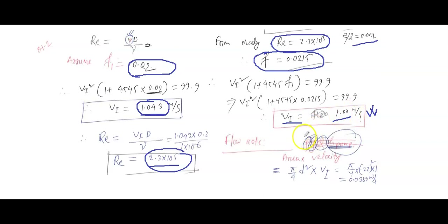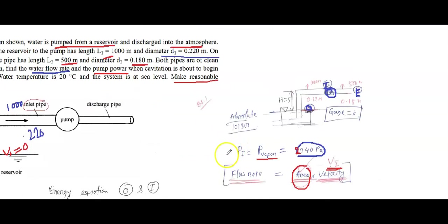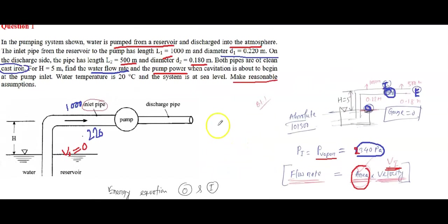Now we can calculate the flow rate: Q = A × V_I = (π/4)·D_I² × V_I. Substituting the diameter and velocity, we get the flow rate Q. That completes the first part. This is a complex problem requiring many steps — if you get this type of question on the final exam, try to stay calm and work through it systematically.